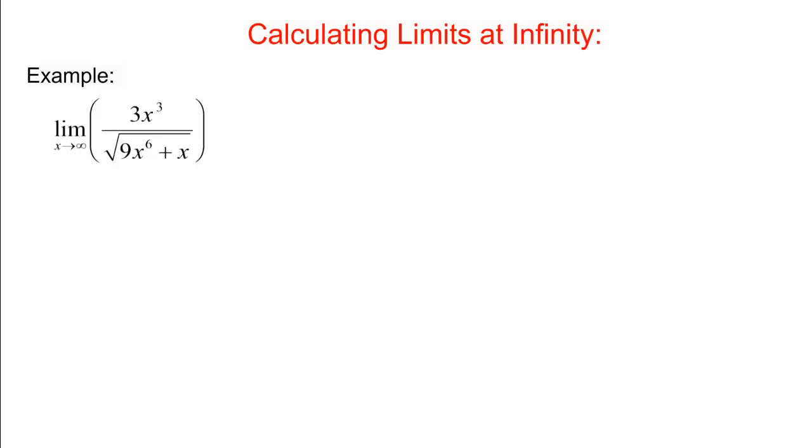So we have the limit as X goes to infinity of 3X cubed divided by the square root of 9X to the 6th plus X. Now we want to divide by the highest power of X in the bottom, and so you might be thinking that we want to divide by 1 over X to the 6th, but that's not correct.